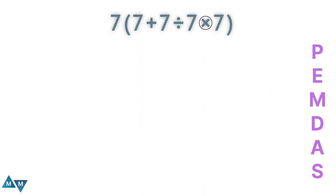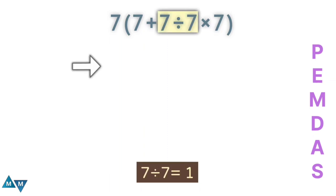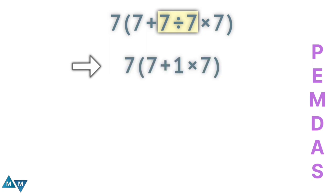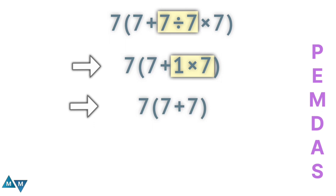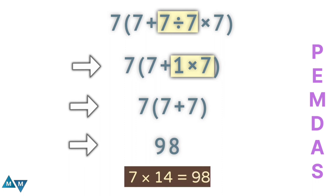Is there any multiplication and division inside the parentheses? Yes. Moving left to right, I see division first. So seven divided by seven is our first move, which equals one. We're still inside the parentheses: now we have seven plus one times seven. Since multiplication has higher priority, one times seven equals seven. Still inside the parentheses: seven plus seven equals 14. Now we're done with the parentheses. Outside, seven next to the parentheses means multiplication. Seven times 14 equals 98. This is our final answer.